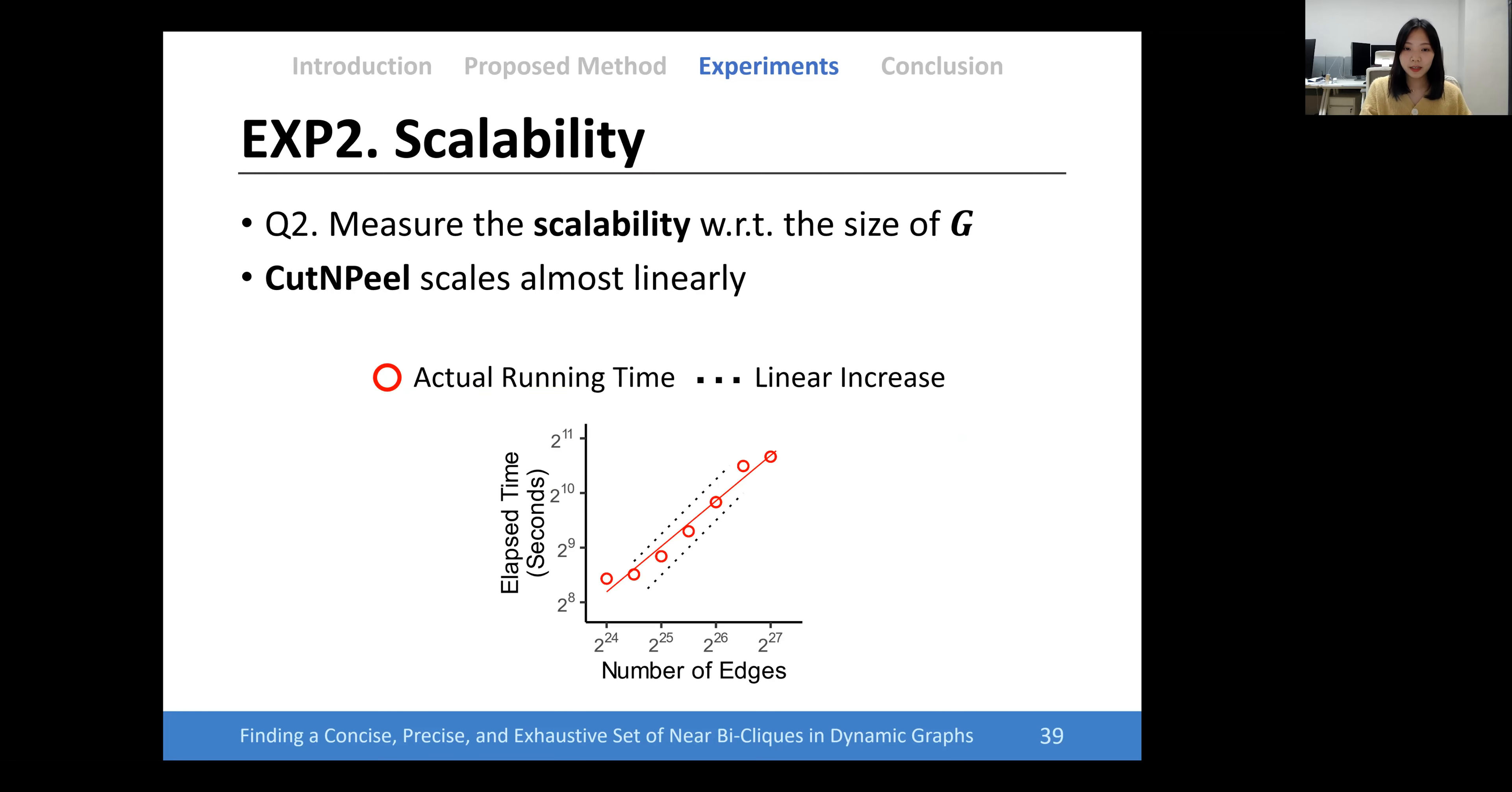In the next experiment, we measured the scalability of Cut and Peel with respect to the size of given synthetic graphs. As seen in the below graph, Cut and Peel scales almost linearly to the number of edges.